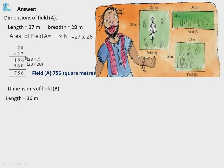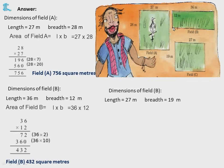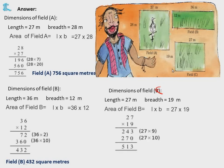Field B: length 36 m, breadth 12 m. Area = 36 into 12 = 432 square metres. Field C: length 27 m, breadth 19 m. Area = 27 into 19. First multiply 27 into 9, then 27 into 10, giving 513 square metres. Remember: metre × metre = square metres.